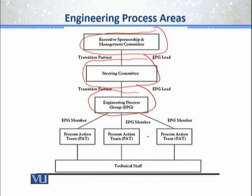Now comes the next tier — the arms of the Engineering Process Group. The left and right arms of EPG are what we call PAT — Process Action Teams. The process action teams are basically the executable wing of the Engineering Process Group.